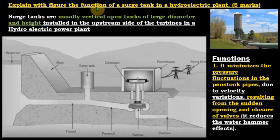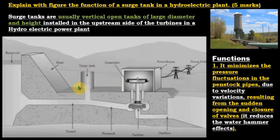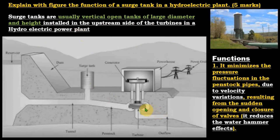Surge tanks are usually vertical open tanks of large diameter and height, installed on the upstream side of the turbines in a hydroelectric power plant. They are positioned between the reservoir and the hydraulic turbines.